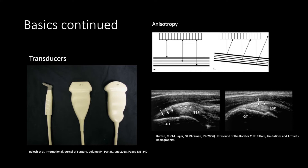These are the three main transducers used in MSK ultrasound. The left two are high frequency linear transducers and the right is a low frequency curvilinear transducer. For evaluation of the hip, use the low frequency curvilinear transducer for the deeper structures. The middle high frequency linear transducer can be used for superficial structures. Regarding anisotropy, make sure to place the probe perpendicular to the tendon or ligament to avoid artifact which can mimic a tear.